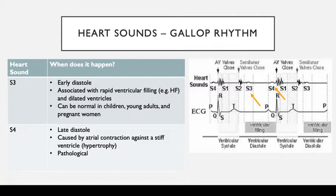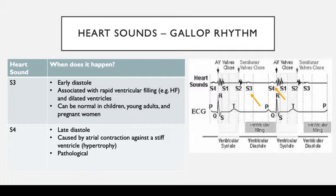The next thing I want to go through is gallop rhythm — heart sounds S3 and S4. S3 is a heart sound heard in early diastole, right after S2, and it is associated with rapid ventricular filling and dilated ventricles. I've heard it once in a patient with heart failure. However, it can be normal in children, young adults, and pregnant women. So you have to examine the rest of the patient and look for other signs that might point to heart failure, such as peripheral edema.